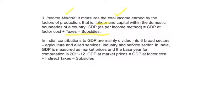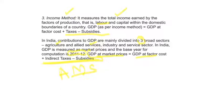In India, contributions to GDP are mainly divided into three broad sectors. India is a developing nation, and GDP contributions come from agriculture, manufacturing, and service sectors. In India, GDP is measured at market prices. GDP at market price equals GDP at factor cost plus indirect taxes minus subsidies.